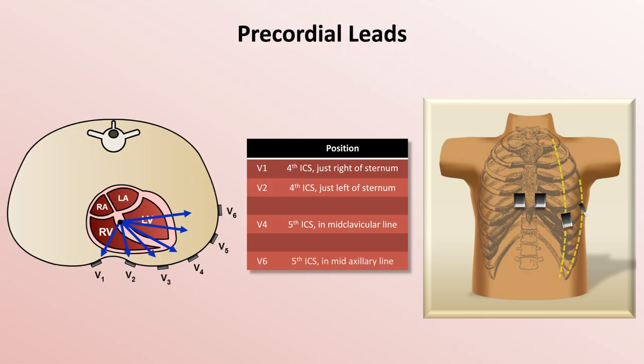V6 in the fifth intercostal space in the mid-axillary line. V3 goes halfway between V2 and V4, and finally V5 goes halfway between V4 and V6.